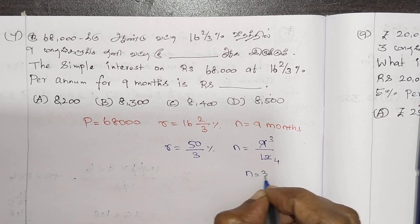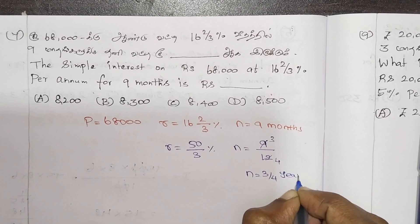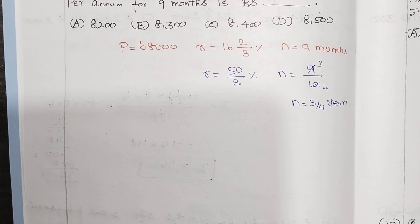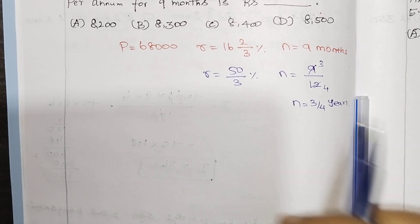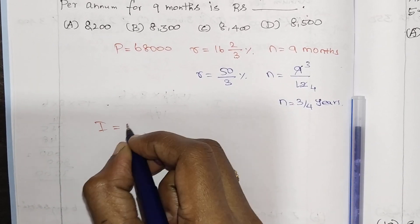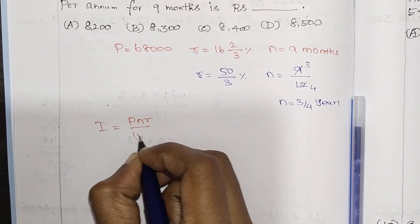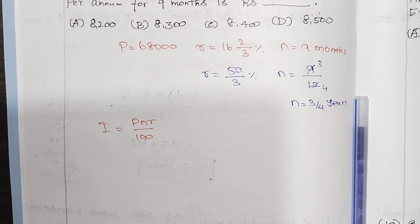The right number is 3. Now let's use the formula. The simple interest is equal to PNR divided by 100.